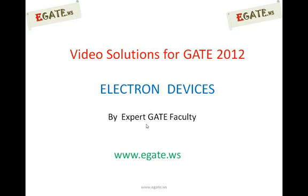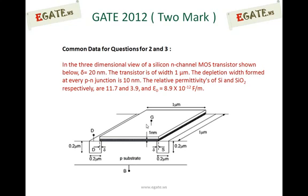Hello, we are discussing video solutions for GATE 2012 ECE branch and the topic is electron devices. The two-mark questions in the series — this is a linked question that is common data for both questions two and three. We will discuss the first one now and the second one later. The common data given is for a three-dimensional view of a silicon n-channel MOS transistor.